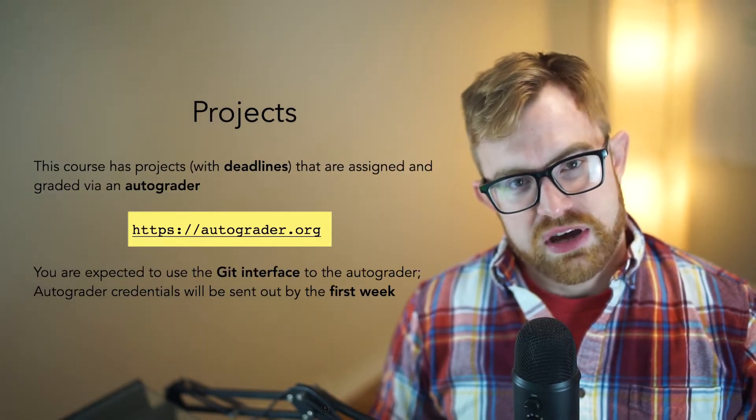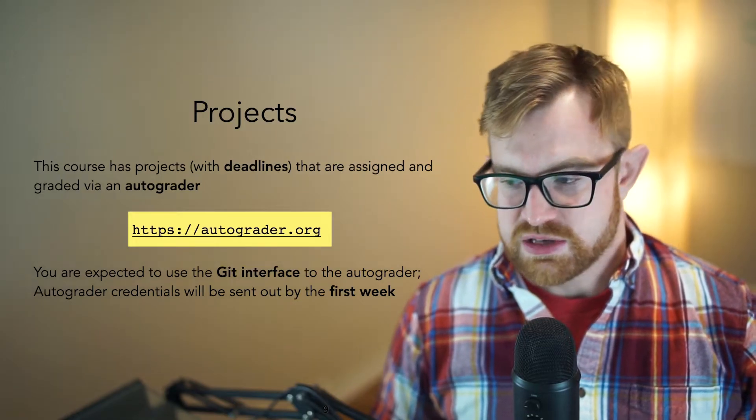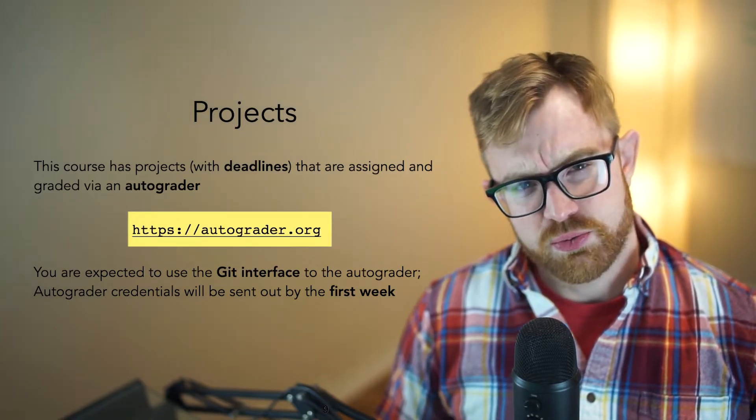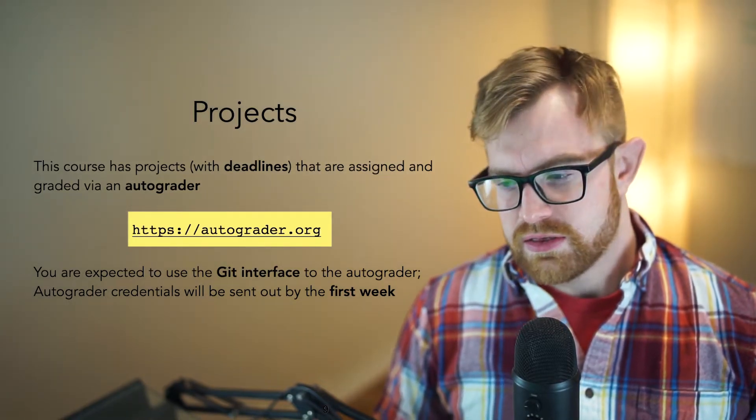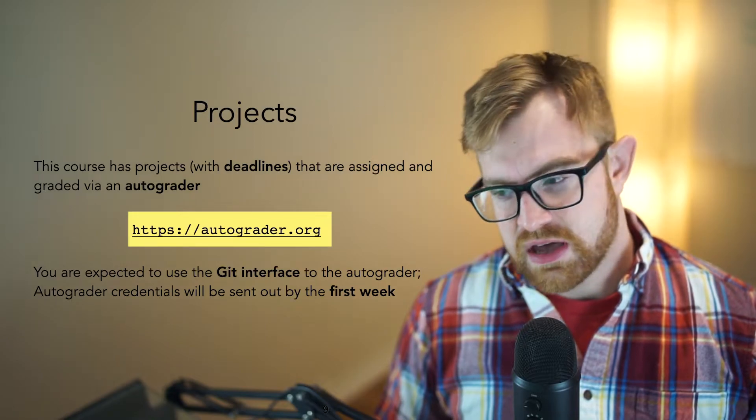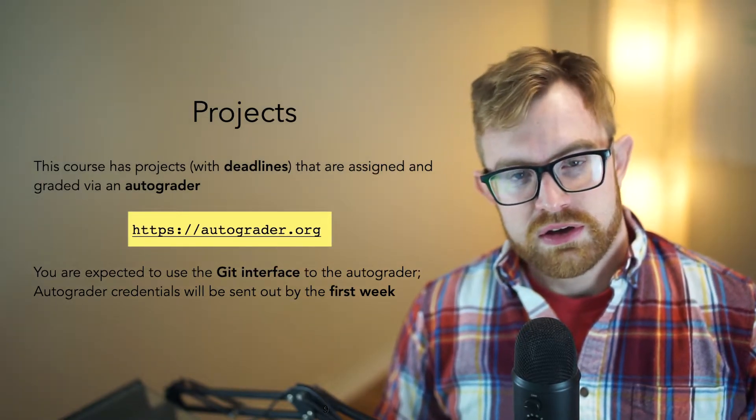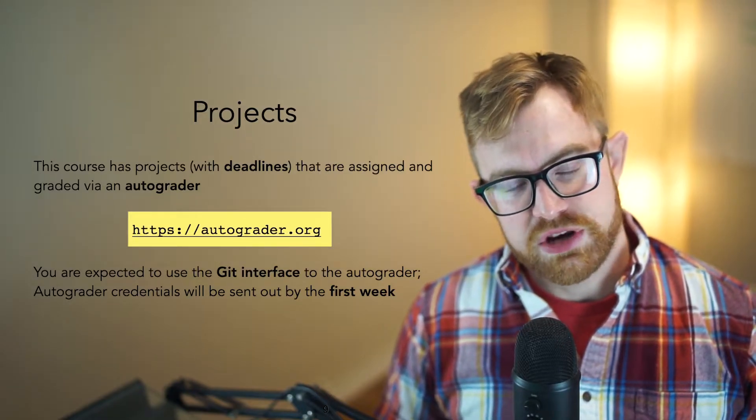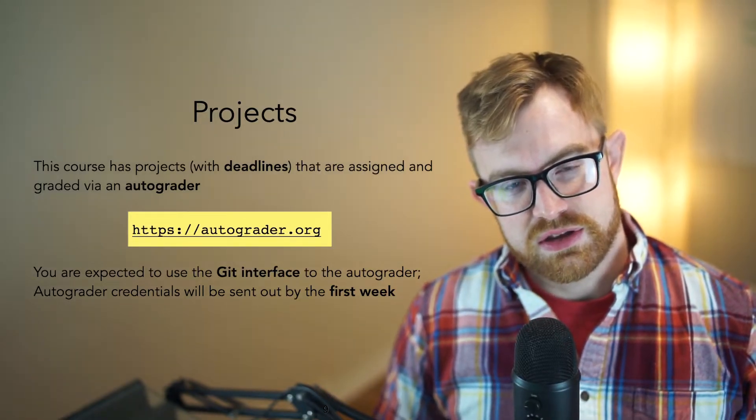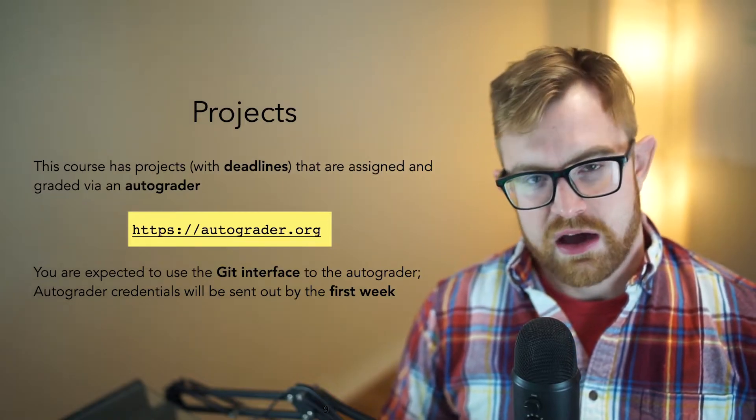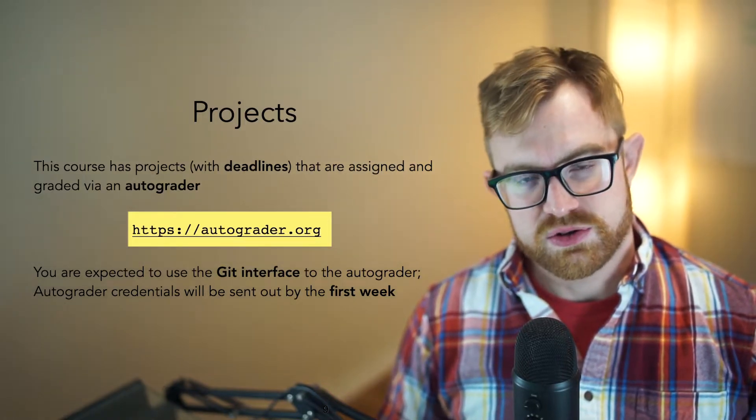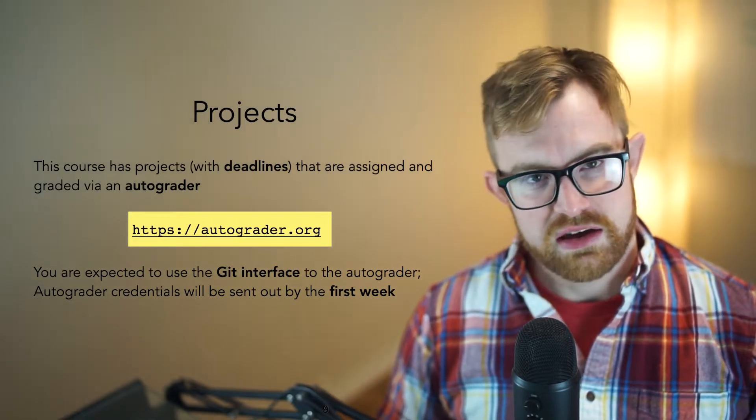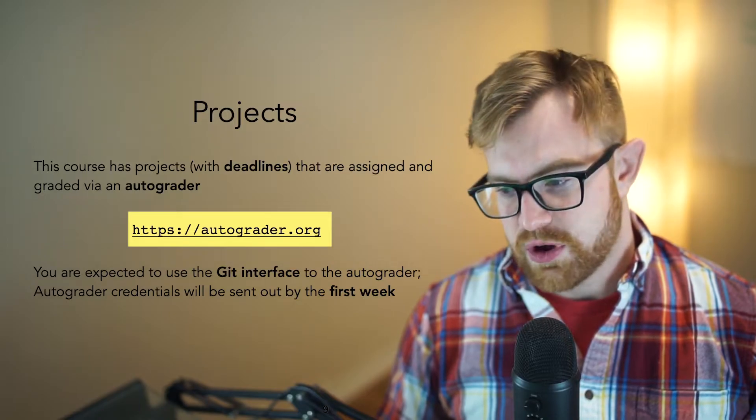Okay, so the course has several projects. The projects do have deadlines. The deadlines will generally be about 12 days from when they're assigned. The projects will be graded on an autograder. The URL is HTTPS and then autograder.org. So it's just autograder.org. You should go there. You'll get credentials probably from Chang, one of the TAs. He'll send those to everyone probably on Slack or your email sometime early in the first week of class. So log in, make sure that you can actually check it out and make sure that when you're ready, we'll be able to see the first project.